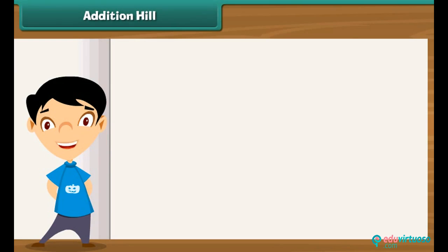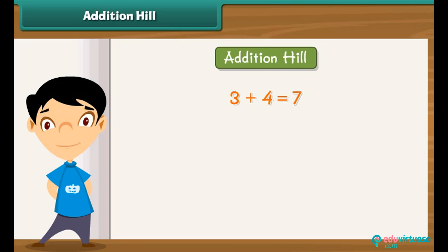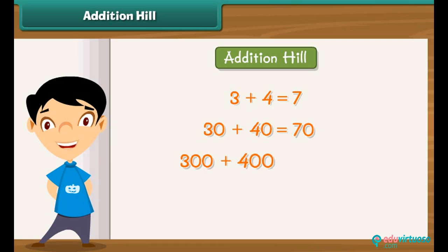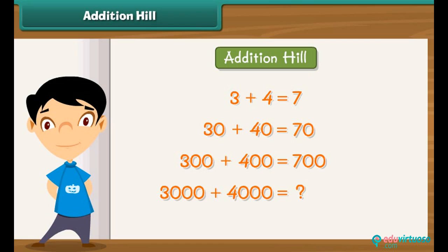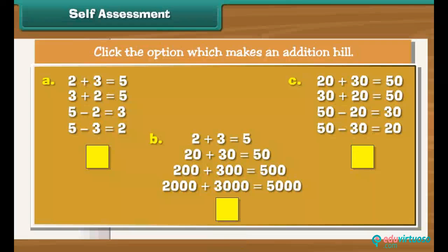There is a very interesting pattern in addition called the Addition Hill. We know that 3 plus 4 is 7, so 30 plus 40 is 70, and 300 plus 400 is 700. You can now tell that 3000 plus 4000 is 7000. As this pattern gives a hill-like structure, we call it the Addition Hill. Let's have a look at what we have learned — click the option which makes an Addition Hill.